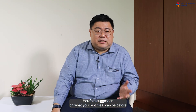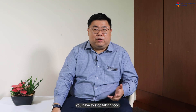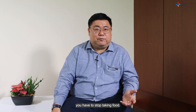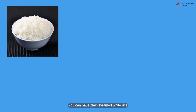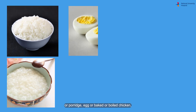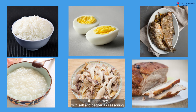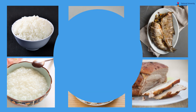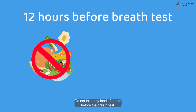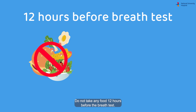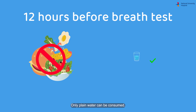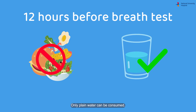Here is a suggestion of what your last meal can be before you have to stop taking food. You can have plain steamed white rice, porridge, egg, or baked or boiled chicken, fish or turkey with salt and pepper as seasoning. Do not take any food 12 hours before the breath test. Only plain water can be consumed.